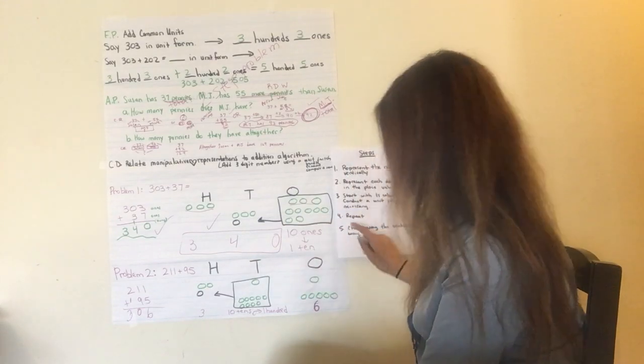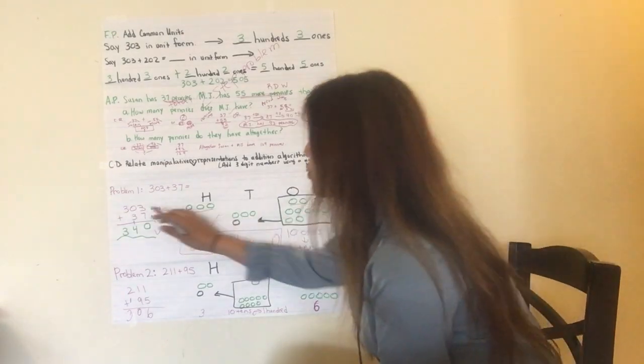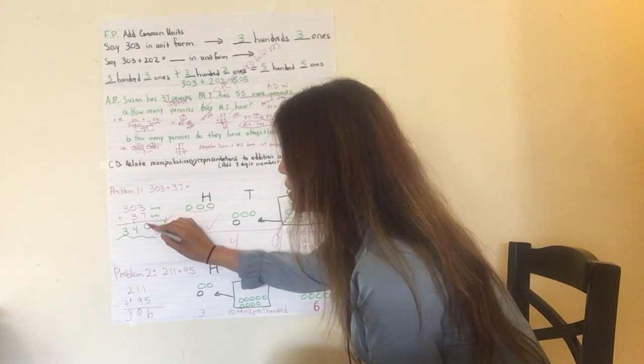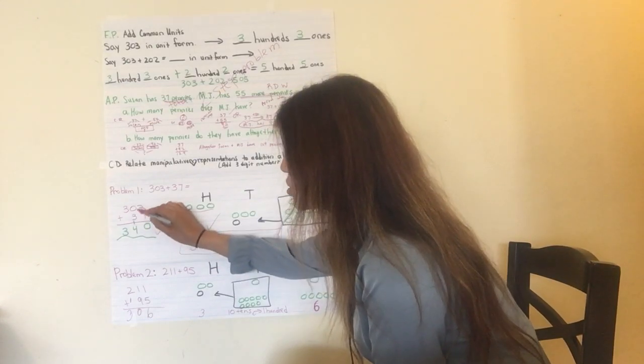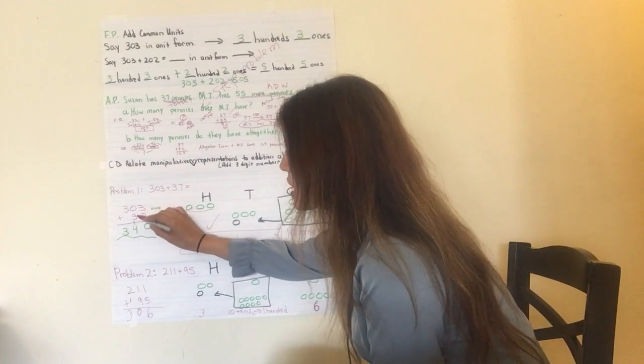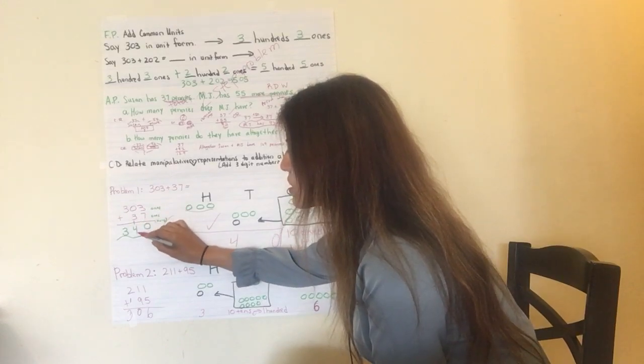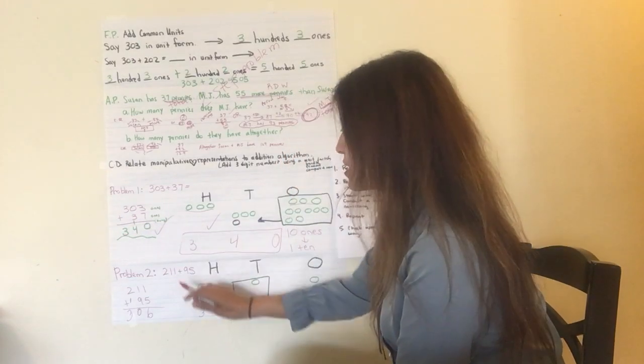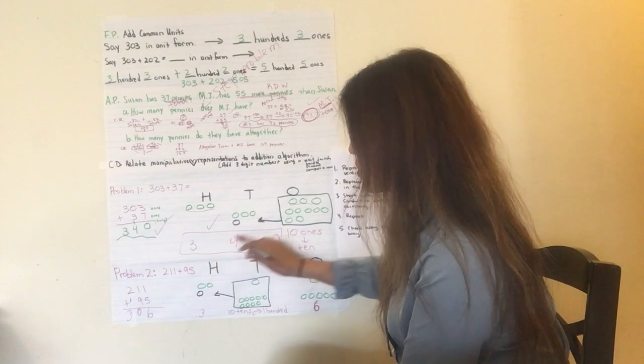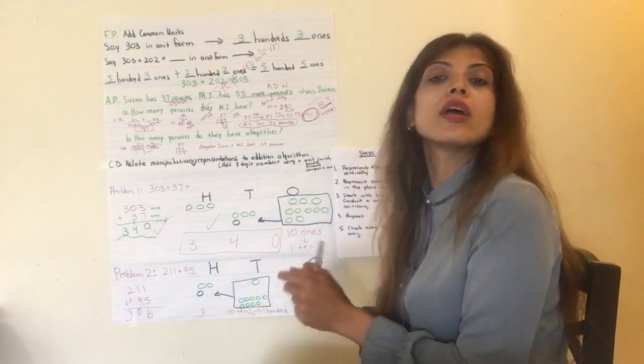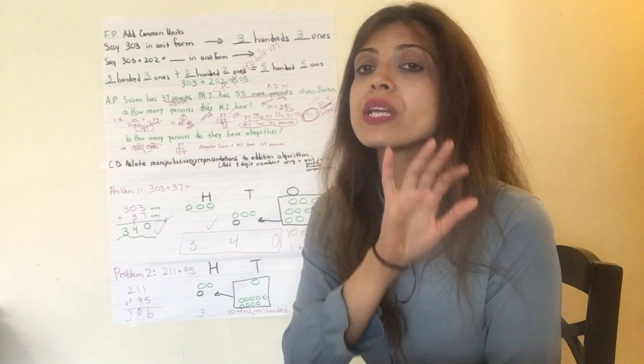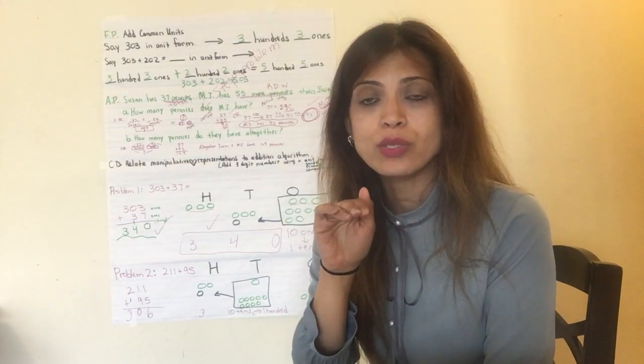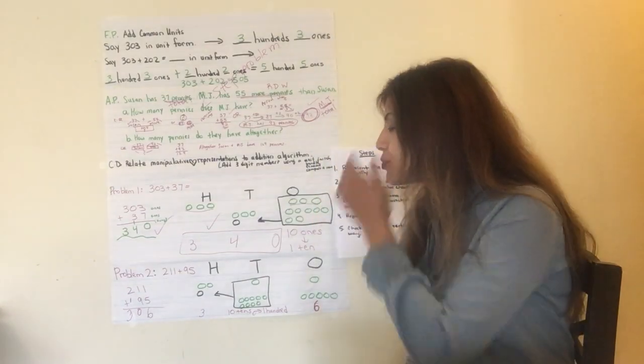Now, I'm going to check this, as it says, using the vertical way. 303 plus 37, three ones plus seven ones equals ten ones. I keep the zero here. I conduct a unit switch where I take the 1 ten on the tens column. Zero tens plus three tens plus 1 ten equals four tens. I bring down the 300. That's 340. 340. Do they match? Yes, they do. 340, 340. Excellent. Excellent job. Good job, boys and girls. You guys are doing amazing work. I hope you're focusing. And remember, you guys are rock stars. You are always going to be rock stars. Good, good work. So, let's move on to problem two.